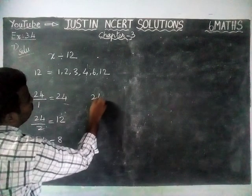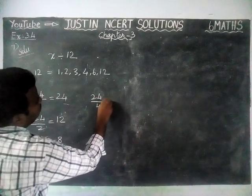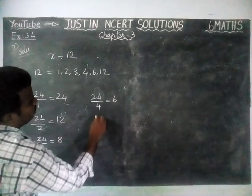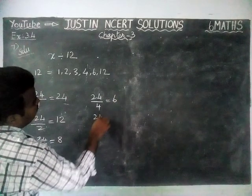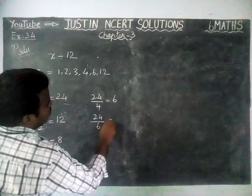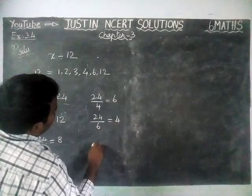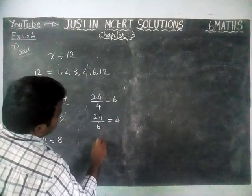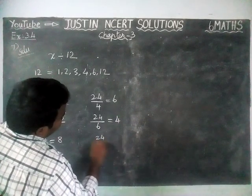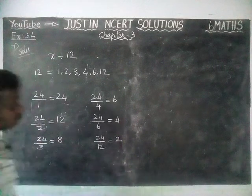If you divide 24 by 4, you get 6, since 4 × 6 = 24. Dividing 24 by 6 gives 4, since 6 × 4 = 24. And 24 divided by 12 gives 2.